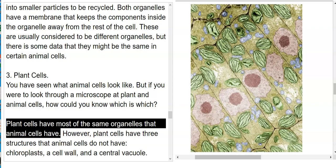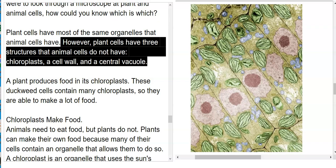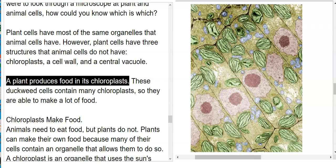Plant cells have most of the same organelles that animal cells have. However, plant cells have three structures that animal cells do not have: chloroplasts, a cell wall, and a central vacuole. They have some of the other things too—they have the nucleus—but they also have these three things.